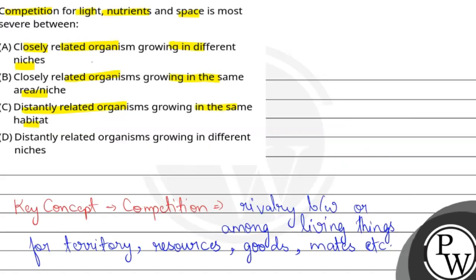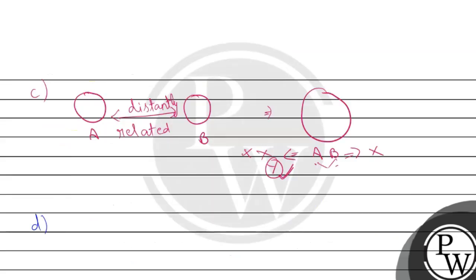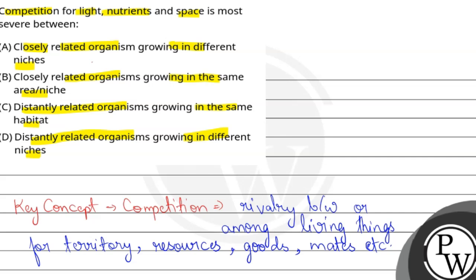Now let's see option D. D is distantly related organisms growing in different niches. Now distantly related organisms. So the correct option is option B.